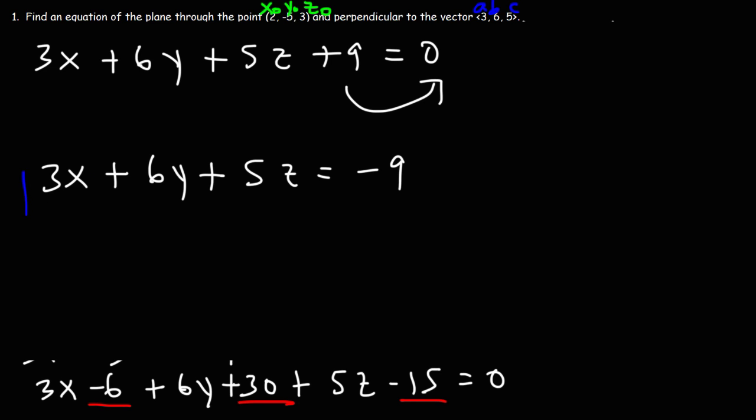So this is the equation of the plane that contains the point 2, negative 5, 3, and it's perpendicular to the vector 3, 6, 5. So that's how you could find it.